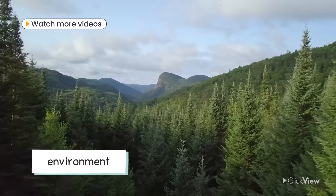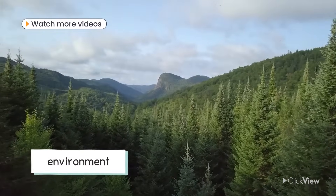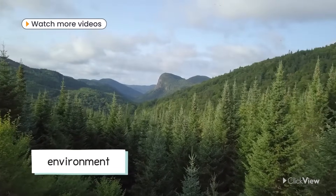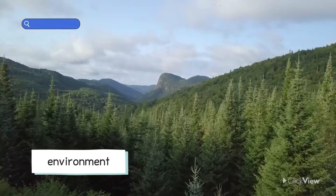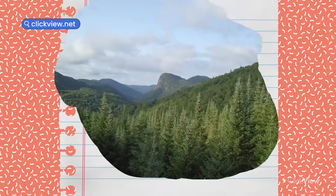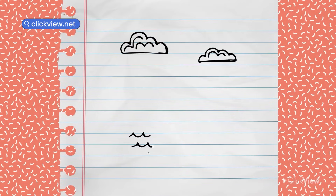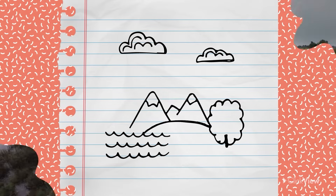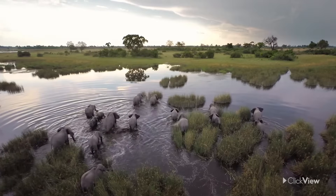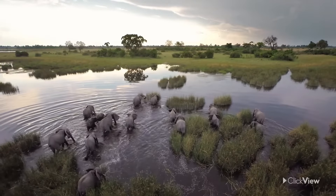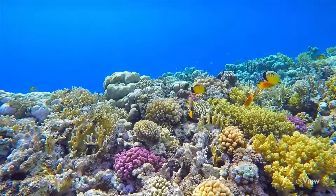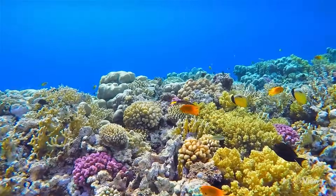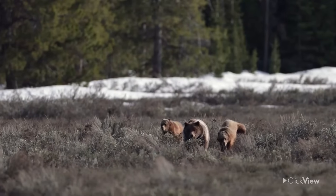An environment is the surroundings in which a plant or animal lives. It includes air, water, and land. There are many different types of environments all over the world.